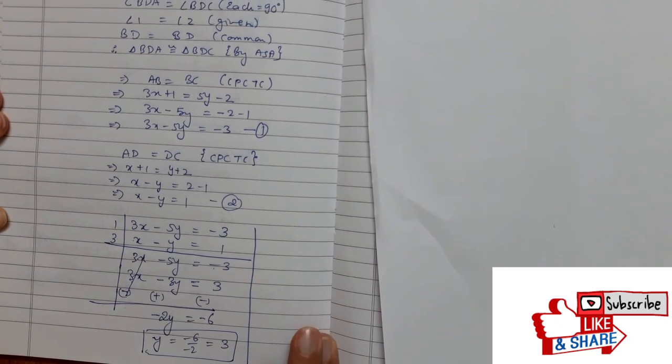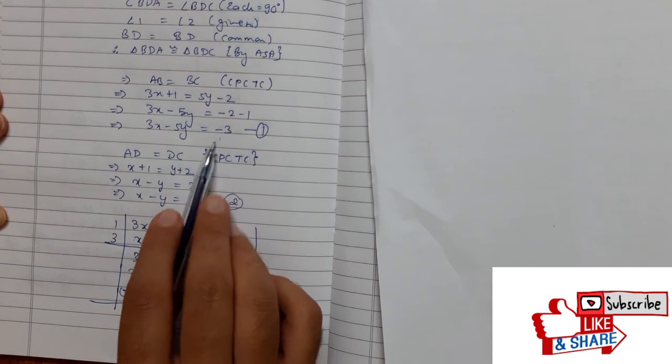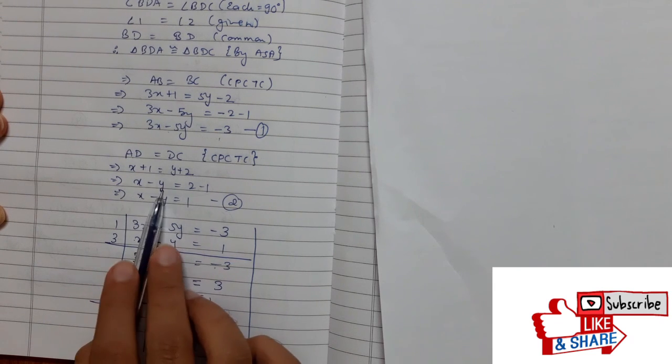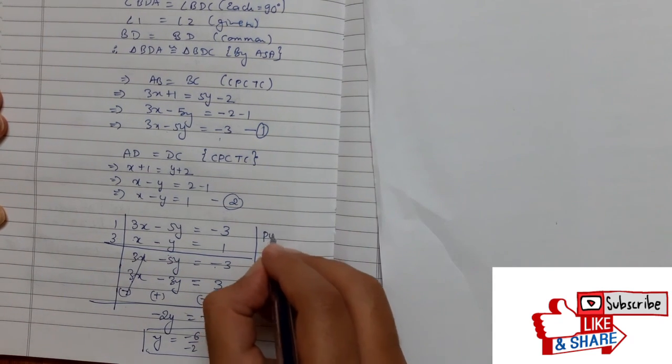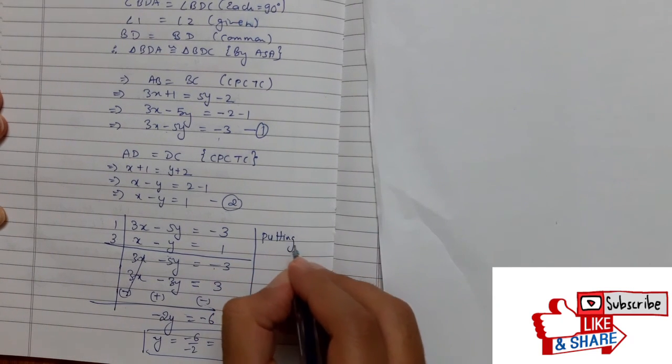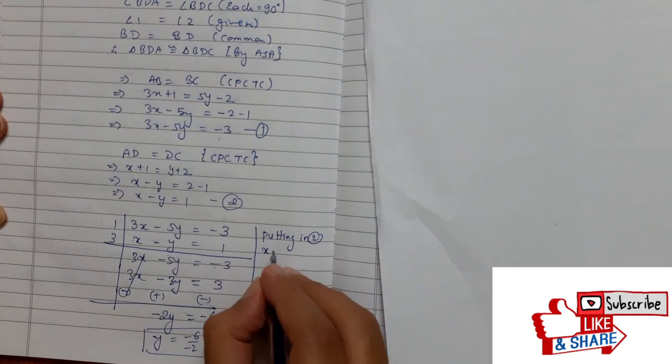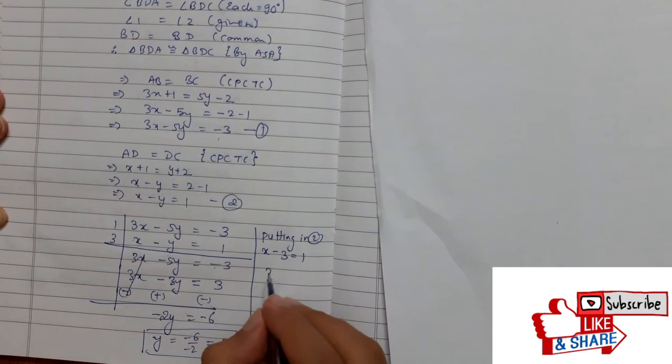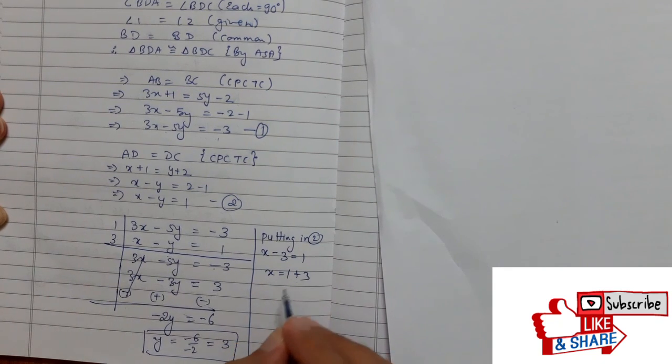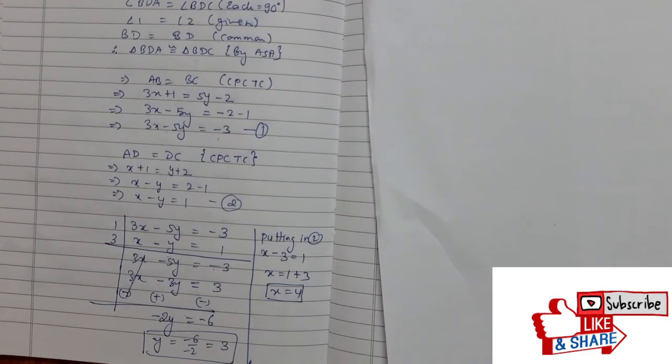We got the value of y. I can substitute in one equation or two equations. The second equation is a bit easy, so I am putting it in equation 2. So x minus 3 equals 1, x equals 1 plus 3, x equals 4. So therefore, we got both the values of x and y.